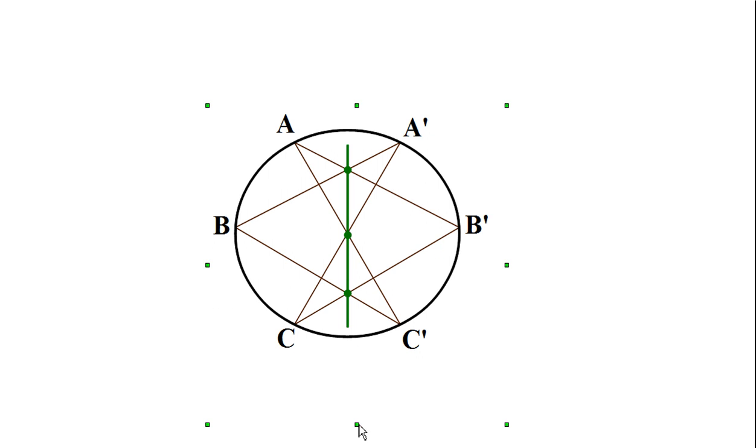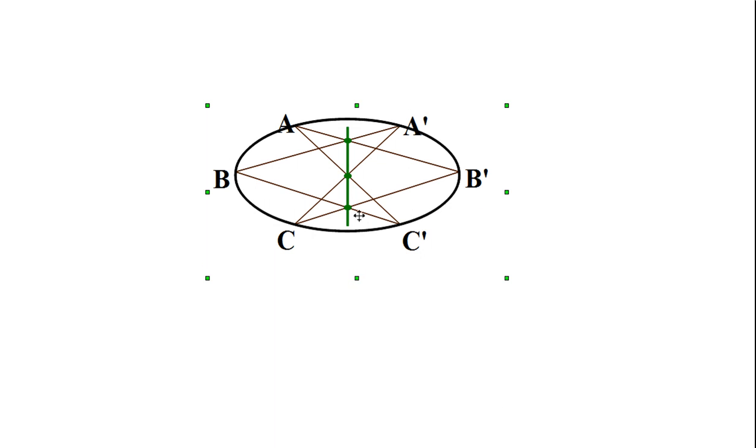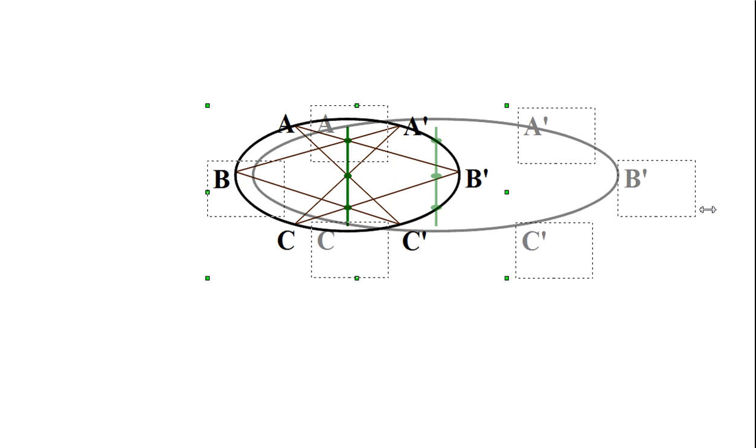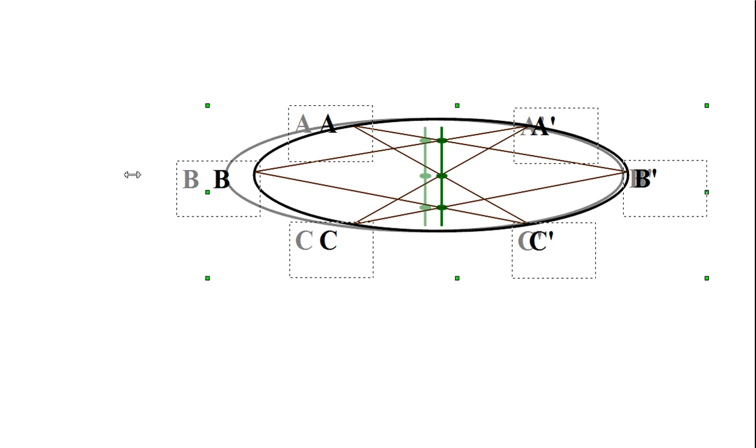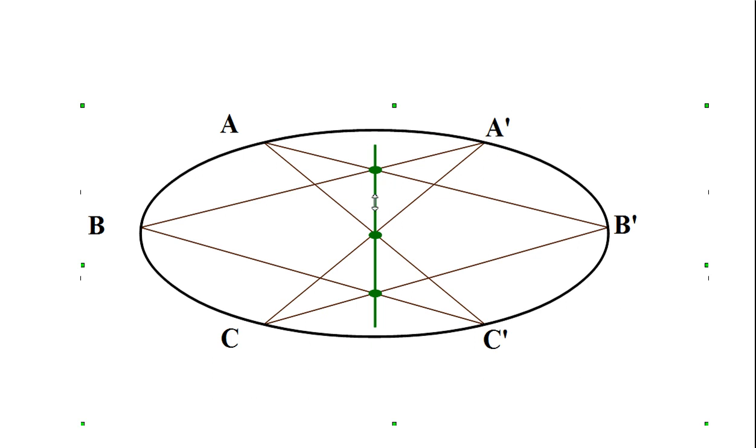And while I started out with the circle, this will be true even if we have an ellipse. And no matter what the shape of the ellipse is, these three points will always be on a line.